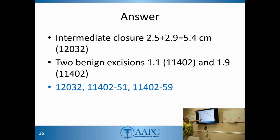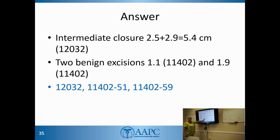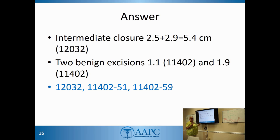Here are our codes. A layer closure is actually billed greater than a benign lesion excision, so it goes first — 12032, then 11402, with modifier 51 for multiple procedures. We needed 11402 twice because we had two separate excision sites on the back. Modifier 59 is placed on the second 11402 to explain to the insurance company that it is a separate distinct area. That takes care of the integumentary system.